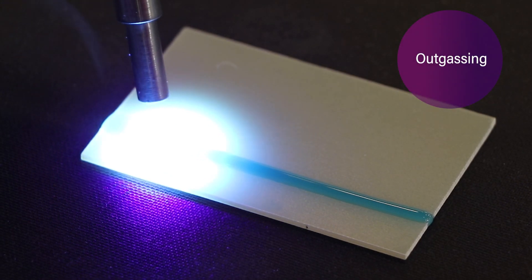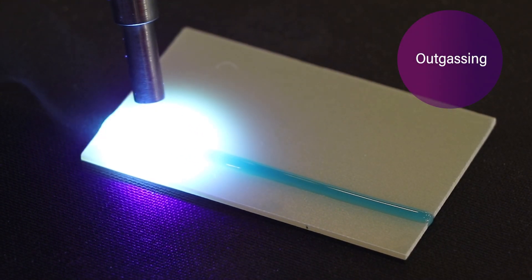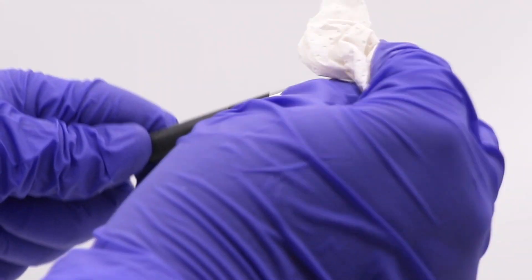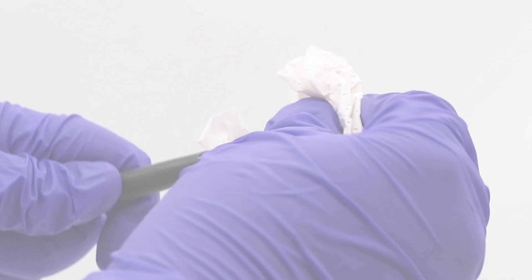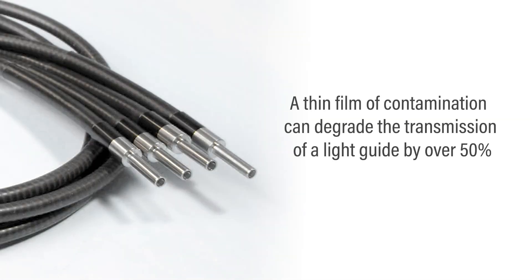Liquid light guides should be periodically cleaned to remove foreign material and deposits caused by outgassing. Cleaning them ensures that maximum UV light transmission is achieved. A thin film of contamination can degrade the transmission of a light guide by over 50%.